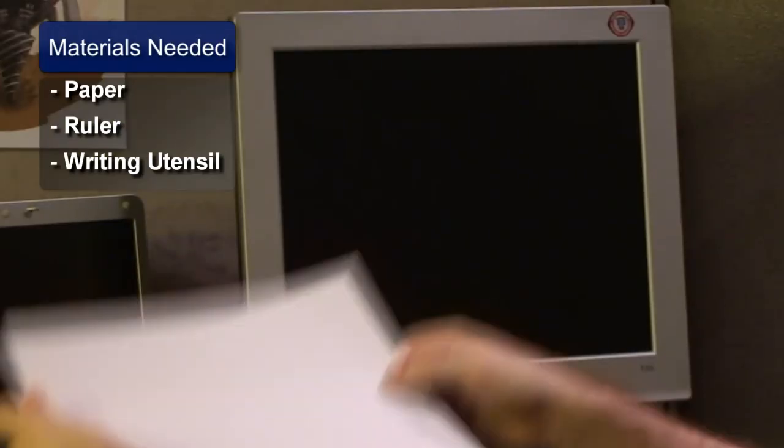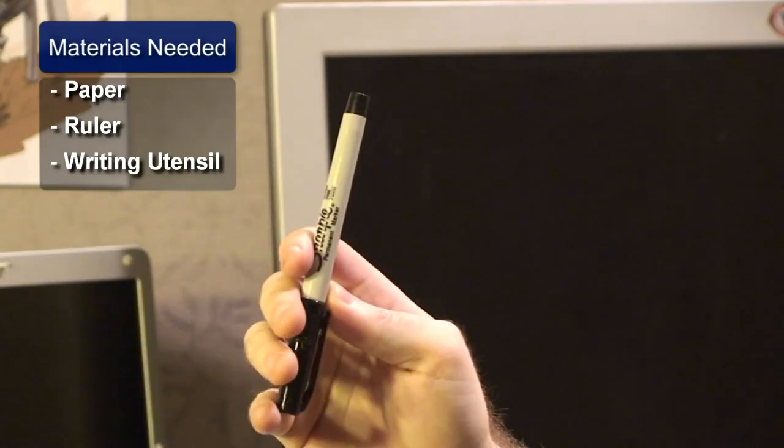First, you're going to want to get paper, a ruler, and a writing utensil. Now, I've already roughed out today's image with a light-graded pencil, just to save time.